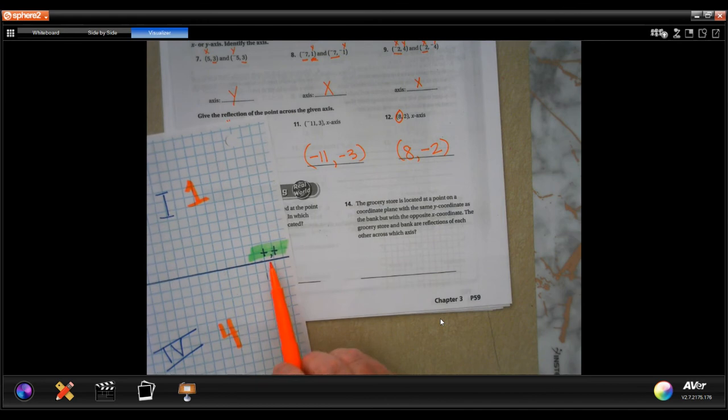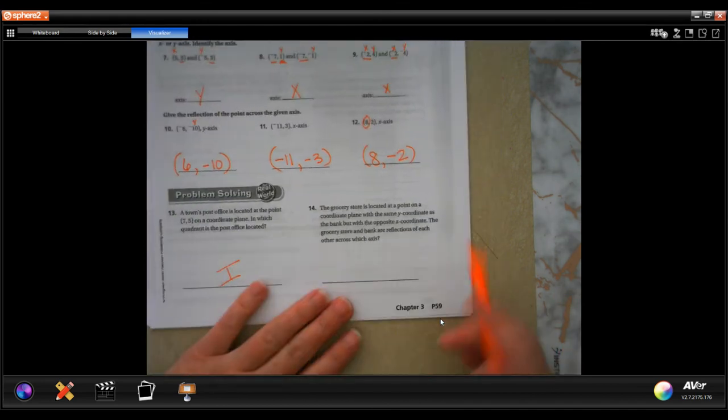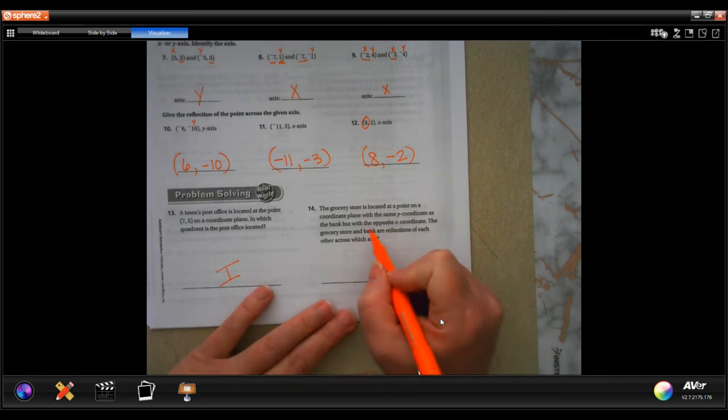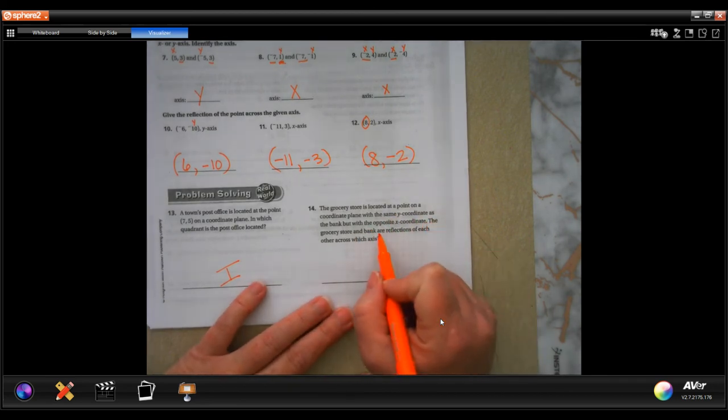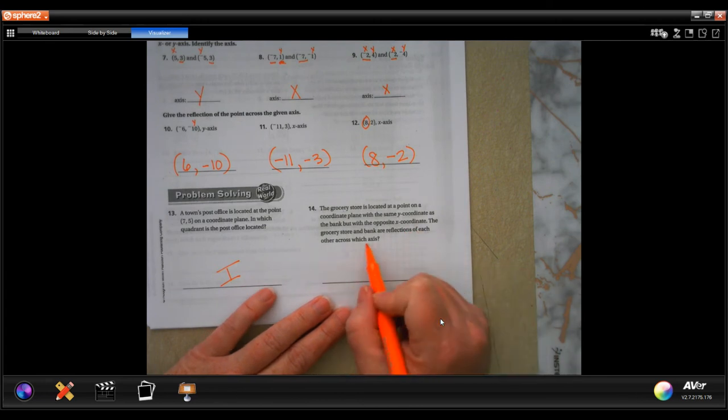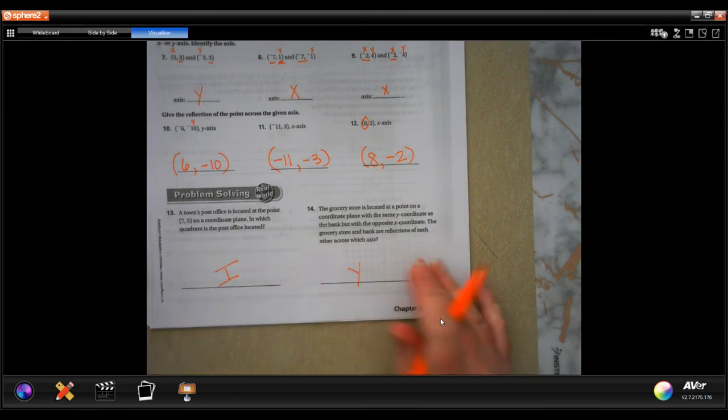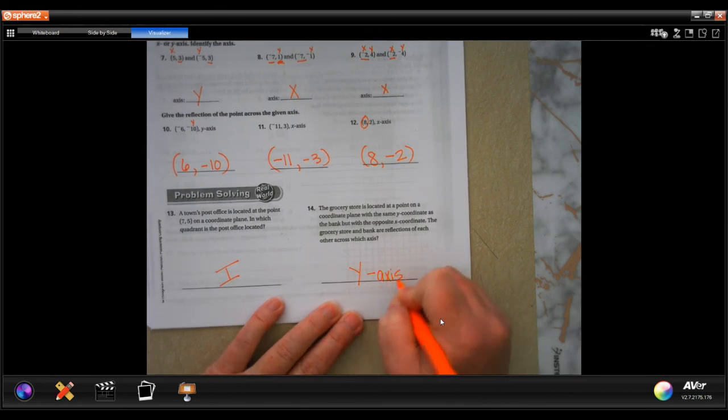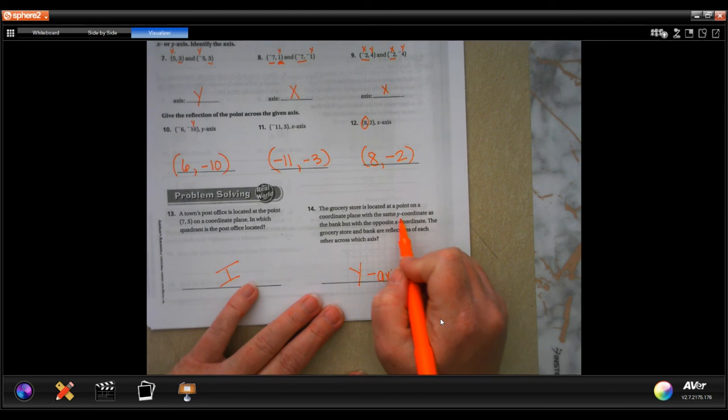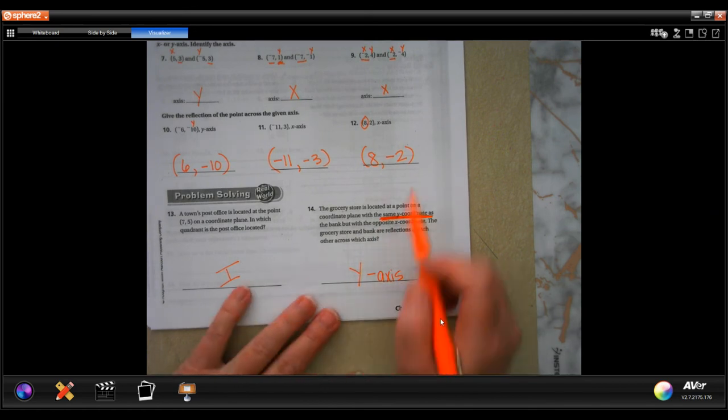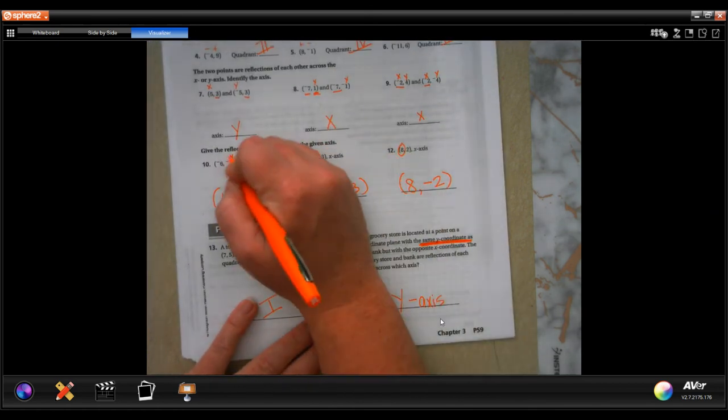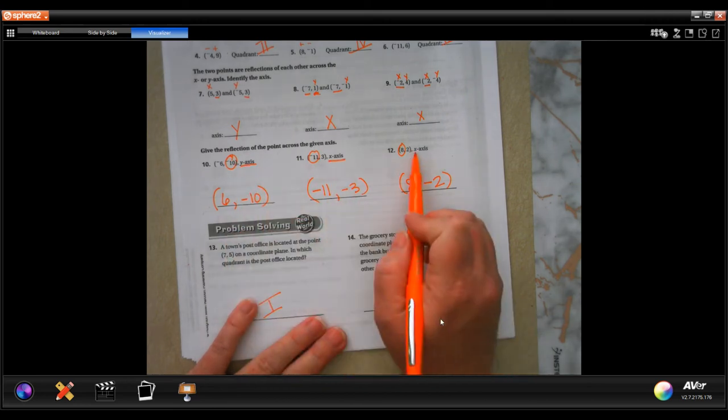The grocery store is located at a point on the coordinate plane with the same y coordinate as the bank but the opposite x coordinate. The grocery store and the bank are reflections of each other across which axis? Same y coordinate, which means y axis. If you want to be perfectly clear, y coordinate, same y coordinate. That's the key. Same one, all of these stayed the same, on the axis that they wanted.